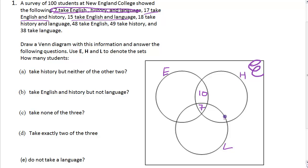15 take English and Language. There's 15 in this group, so take off 7 and we're left with 8. And 18 take History and Language - 18 in this group, so take off 7 leaves 11.